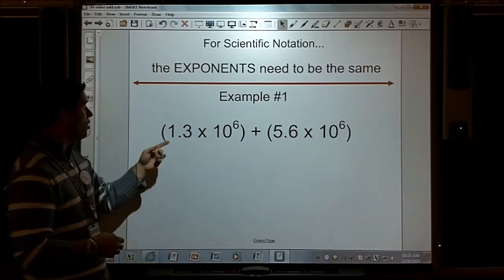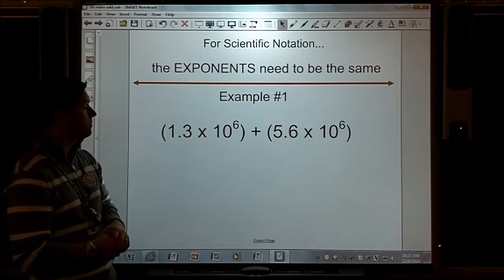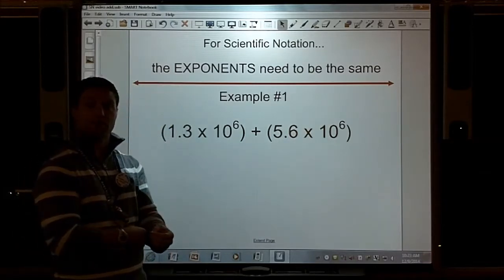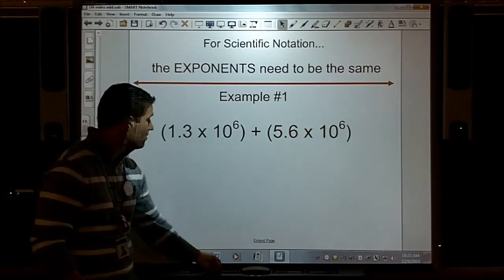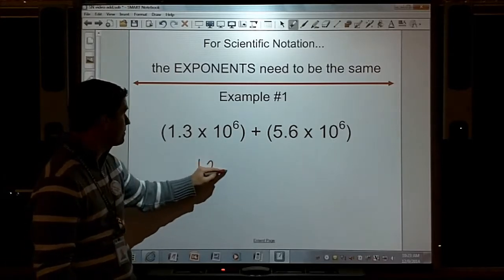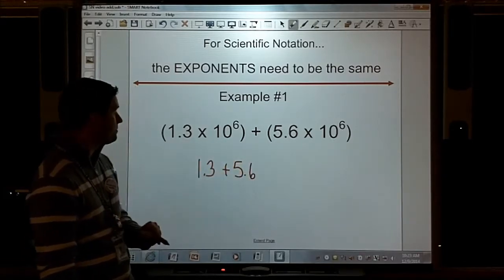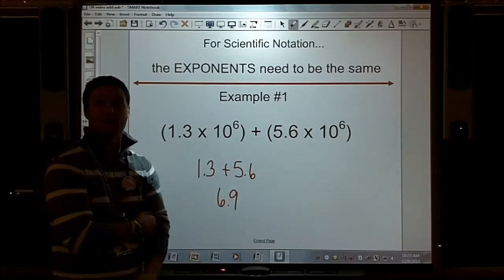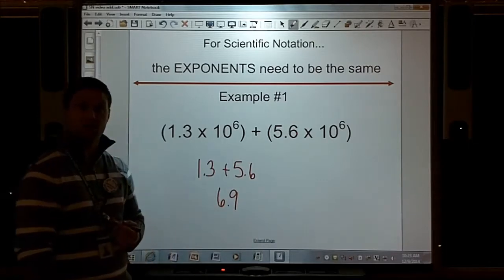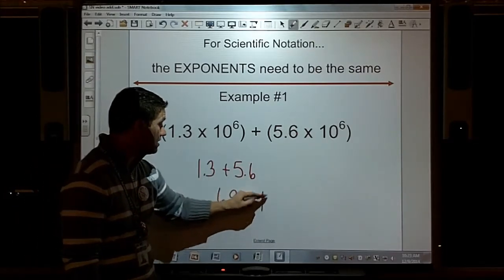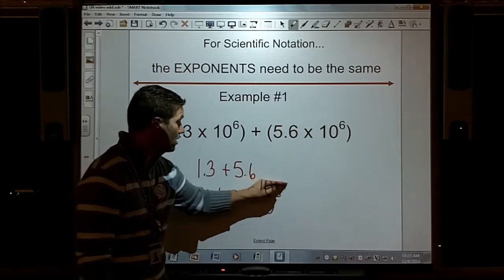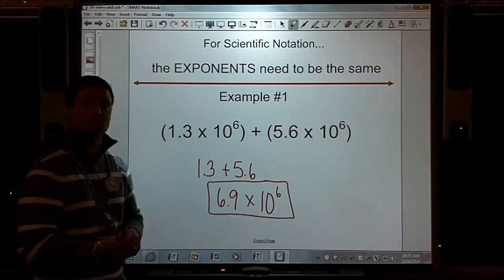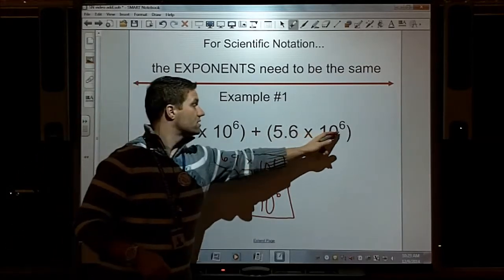For example, 1.3 times 10 to the sixth plus 5.6 times 10 to the sixth. They both are 10 to the sixth power, so I can add those together. I'm going to do 1.3 plus 5.6, and I'm going to get 6.9 times 10 to the sixth power. When I add fractions, the denominator stays the same. When I add scientific notations, the exponents stay the same.